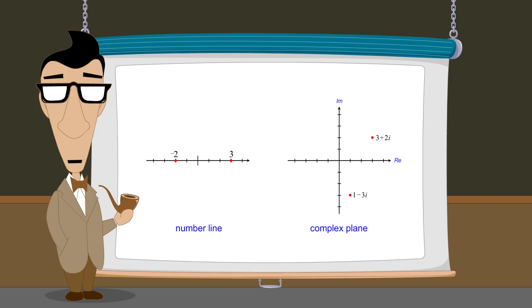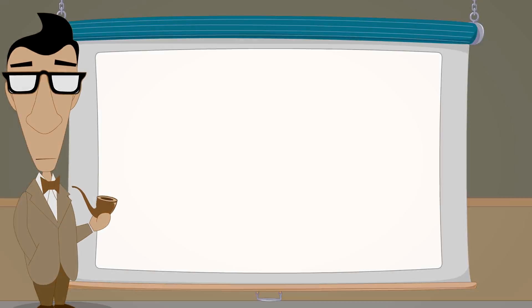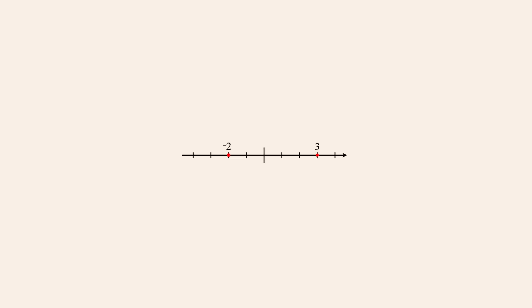Just as the number line allows us to visualize addition and subtraction of real numbers, the complex plane lets us visualize how these operations can be applied to complex numbers. To graphically represent the addition of two real numbers, for example 3 and negative 2, we can imagine arrows extending from the origin to those numbers. Arrows like this that extend from the origin to a point are called vectors. We can graphically represent the addition of these numbers by adding their vectors, stacking them end-to-end to find the sum of their positive or negative distances from the origin. Since vector addition, just like numerical addition, is commutative, it doesn't matter in which order we add the vectors.